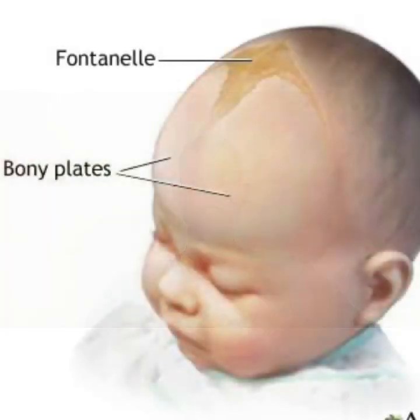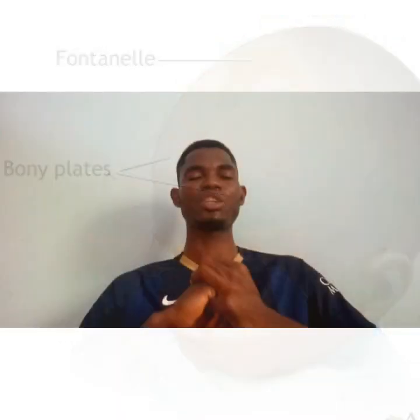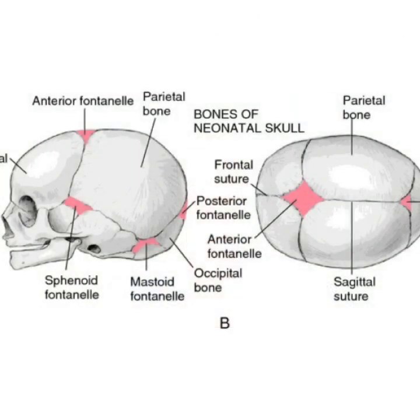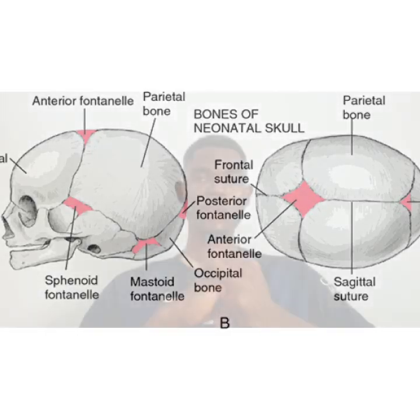In neonates, the sutures are not yet properly fused, so they give rise to important membranous areas known as fontanelles. We have the anterior fontanelle (the frontal fontanelle) and the occipital fontanelle. The frontal fontanelle is located between the coronal suture and the sagittal suture.